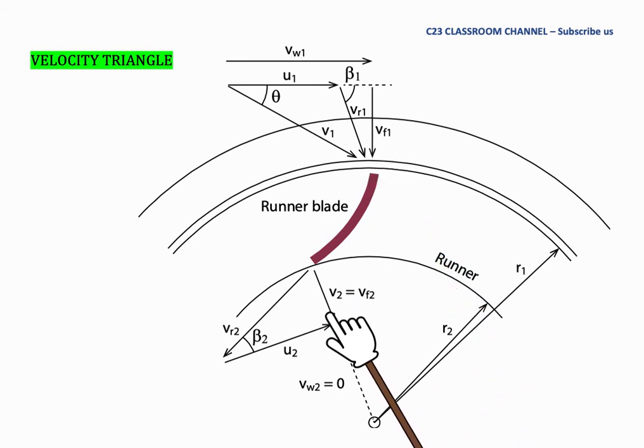At the outlet here, we have absolute velocity V2 as the actual velocity. And then Vr2 will start from here to here and then continue with U2 from here to here. For this velocity triangle, we could say that V2 equals Vf2 because V whirl at the outlet is equal to zero.